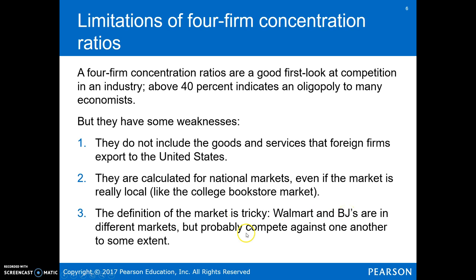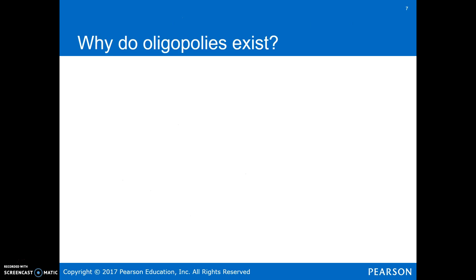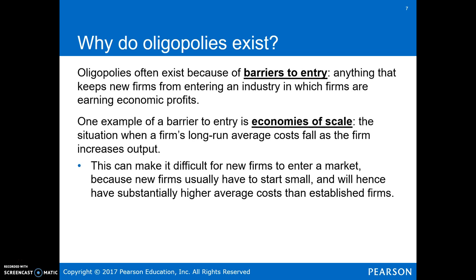So you should have some idea of what we mean by oligopoly — what kinds of firms and industries, like the auto industry. Why do oligopolies exist? Similar to monopoly, it's because of barriers to entry — things that keep new firms from entering the market. A similar barrier is economies of scale. With monopoly, economies of scale lead to a natural monopoly where average total cost falls until just one firm dominates. Here with oligopoly, the same thing happens except it's dominated by a few firms instead of a single firm.